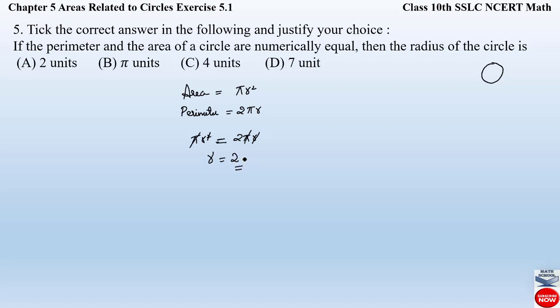So when you cancel, what are we left with? r = 2 is left on the right hand side. So see, we got the value of the radius which is equal to 2 units. Since there is no unit given, simply we will write units. So our correct answer from the given options is answer (A), that is 2 units.